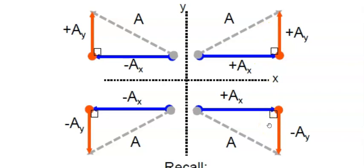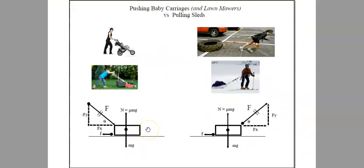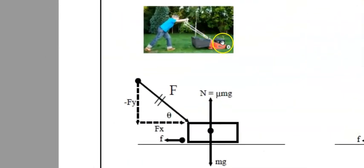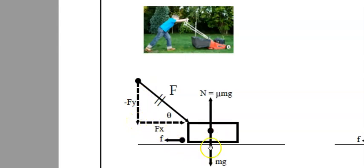We're going to be using information from quadrants 1 and 4 to assist us. In the case of pushing a baby carriage or a lawnmower, the force is directed down and on an angle — this is a quadrant 4 vector, and it has components FX and negative FY. FX pushes to the right while some force is directed downward along the Y axis. We already learned about weight, normal force, and friction, and now we can put this together in an F_net equation.